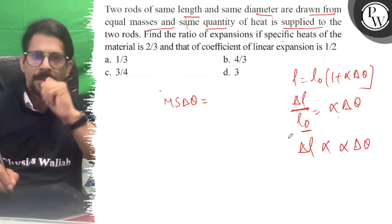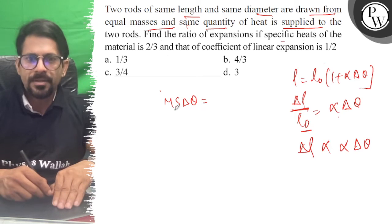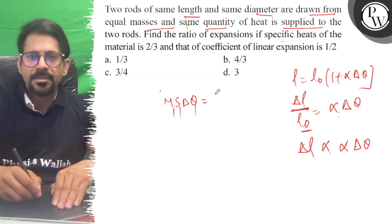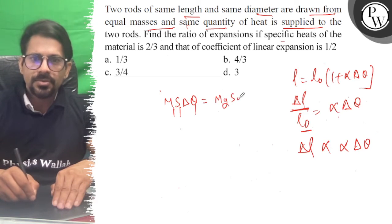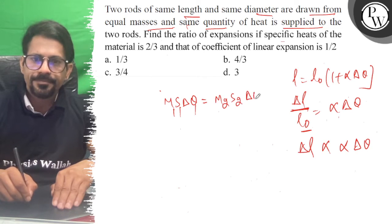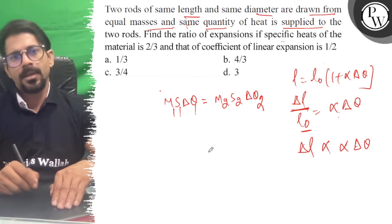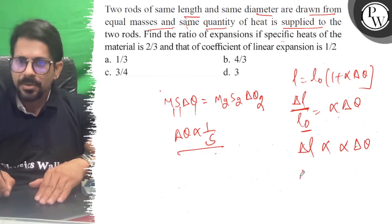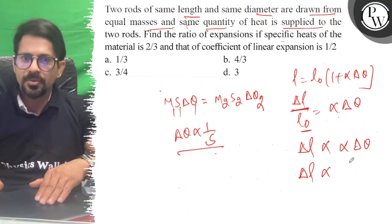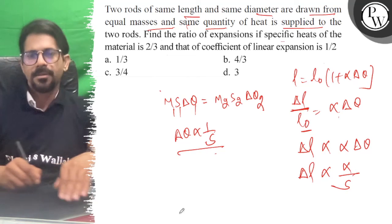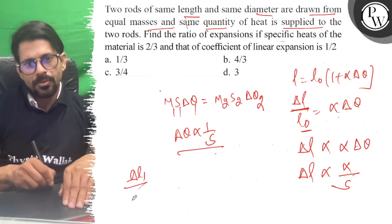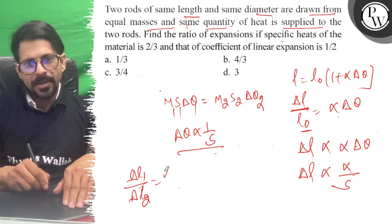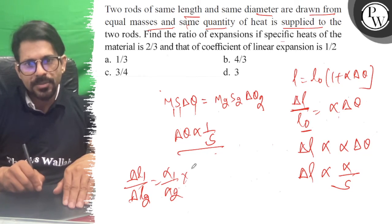Now the heat is the same, so delta theta is proportional to 1 by s. So delta l1 upon delta l2 equals alpha 1 upon alpha 2 into s2 upon s1.